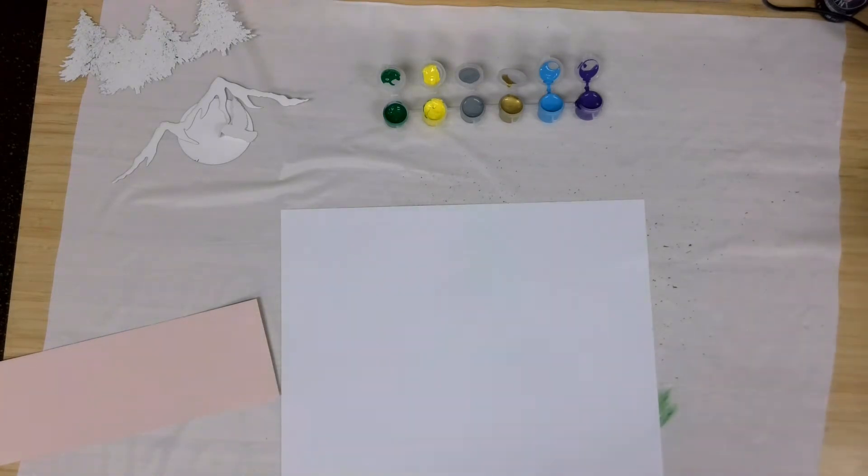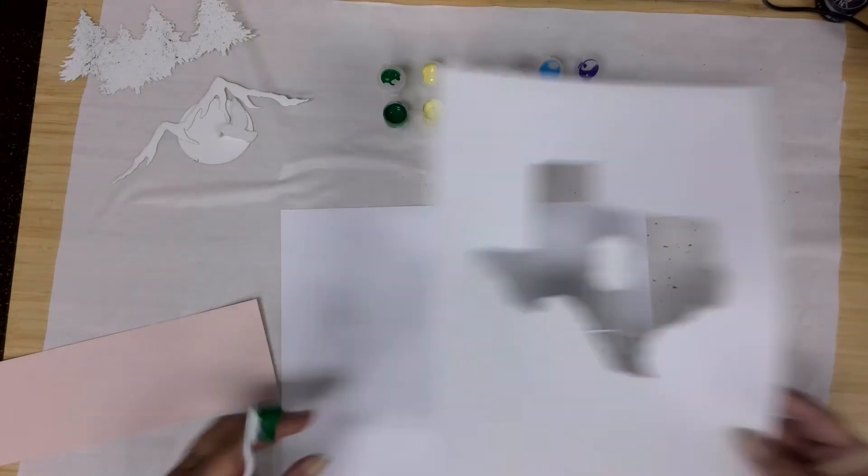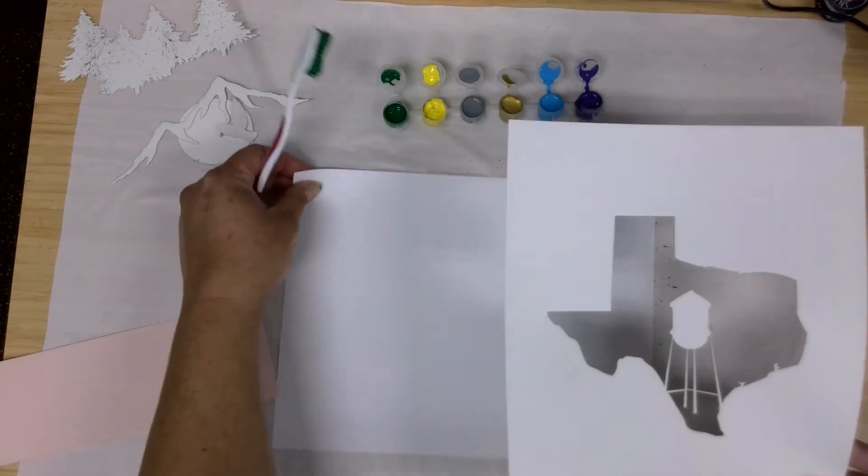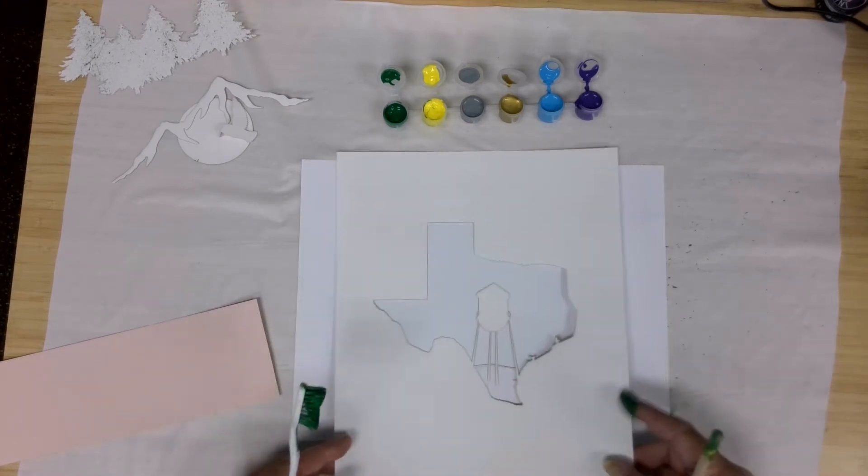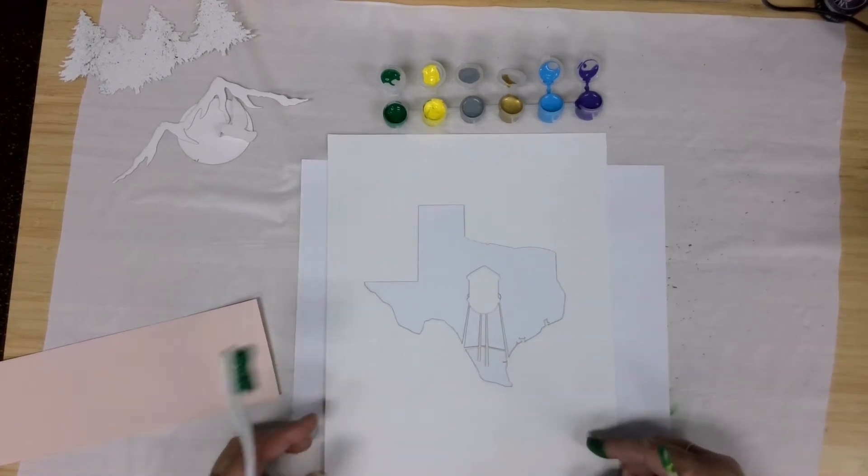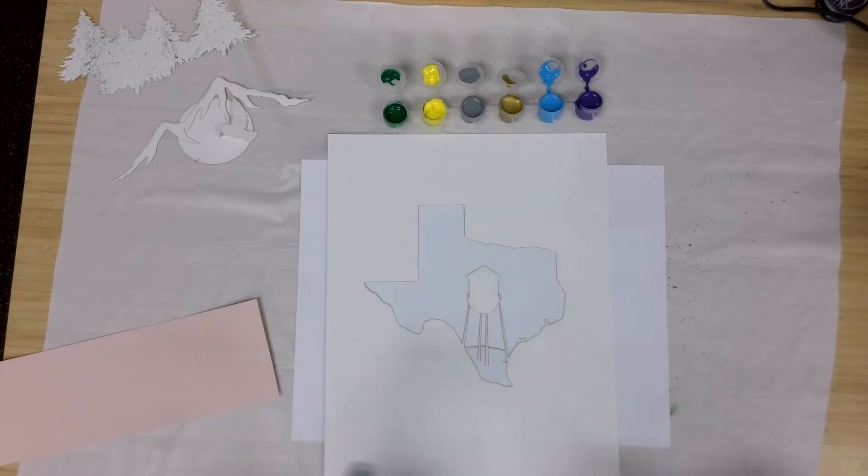This one was a great stencil. I really love this. This is actually the Pflugerville water tower. One of our staff members got a design of that for another project and I decided to use that for this. And I of course just took Texas and put that right in there. So the water tower is kind of in the same area as Pflugerville.